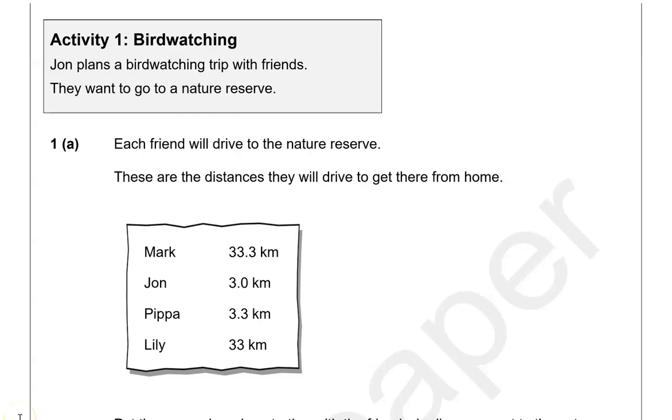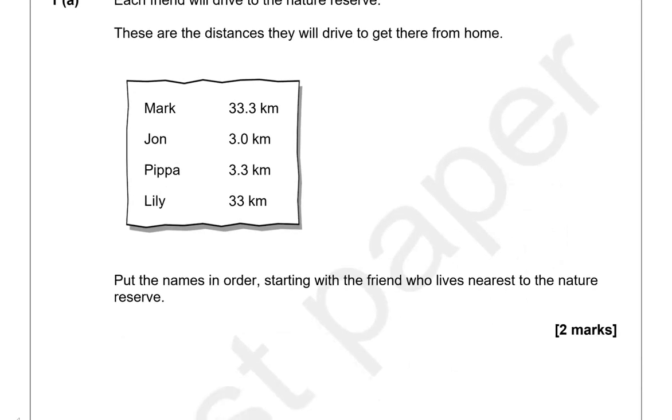John plans a birdwatching trip with friends. They want to go to a nature reserve. Each friend will drive to the nature reserve. These are the distances they will drive to get there from home. Put the names in order, starting with the friend who lives nearest to the nature reserve.